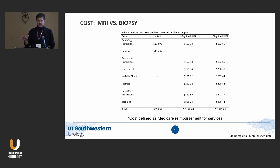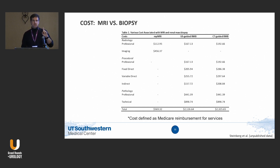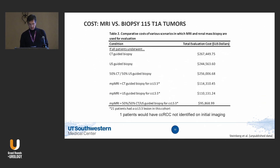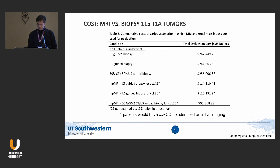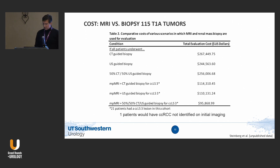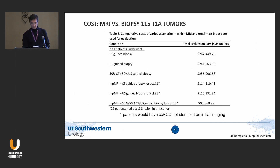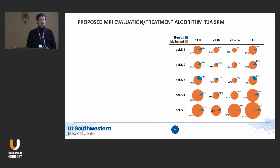Cost-wise, MRI is cheaper than a biopsy. At UT Southwestern, the cost of a multi-parametric MRI is only $500. An ultrasound-guided biopsy is $2,000 and a CT-guided biopsy is over $2,300. Looking at our first paper of 115 patients — if we had biopsied everybody, it would have cost another quarter million dollars. By doing MRI first and only biopsying select patients, we cut those costs by more than 50%.